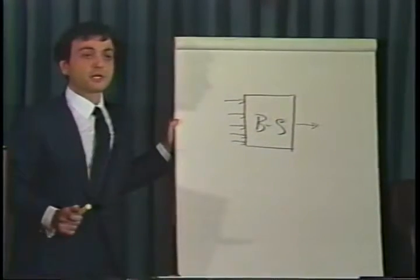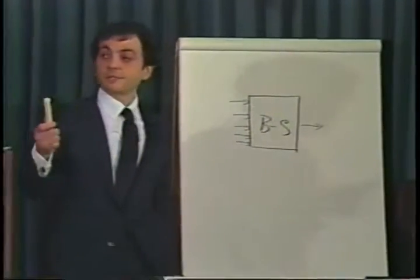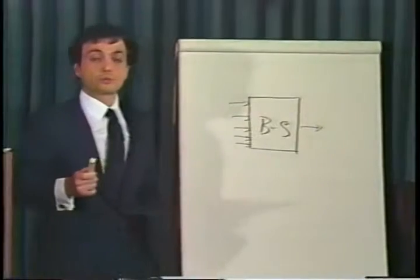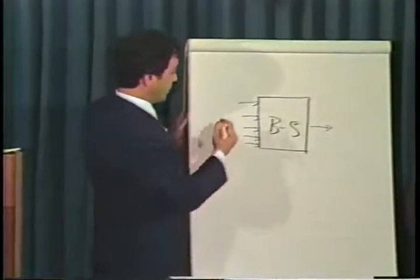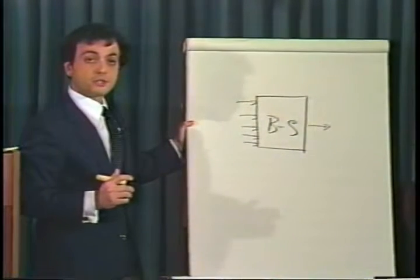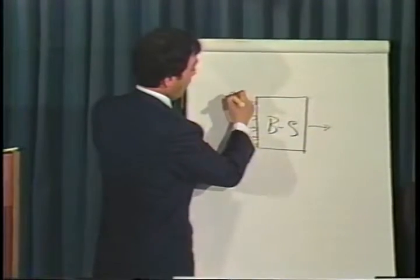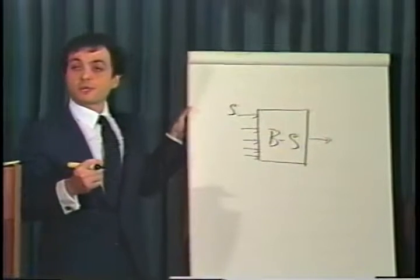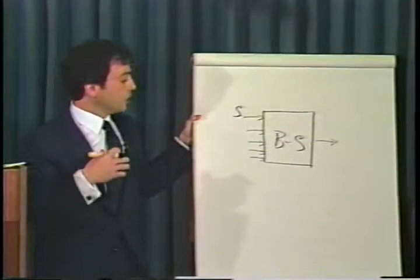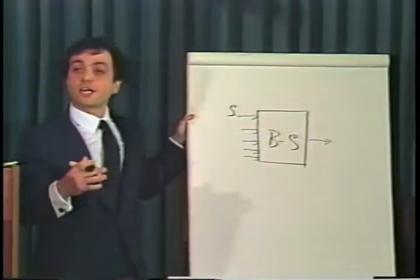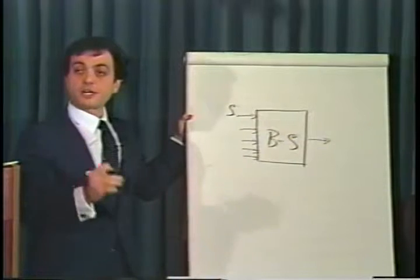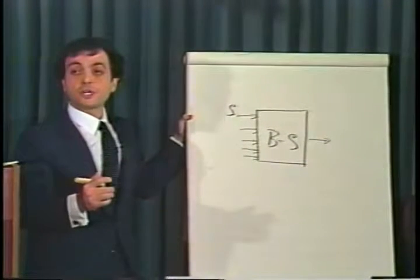What are the inputs that go into the Black-Scholes model? The market price of the underlying stock, and we shall use some notation here — that is denoted as S. When we are dealing with foreign exchange or commodities and so forth, it will translate to the market price of the underlying security. So in a general sense, S stands for the market price of the underlying security, which is one of the inputs that goes into the Black-Scholes model.